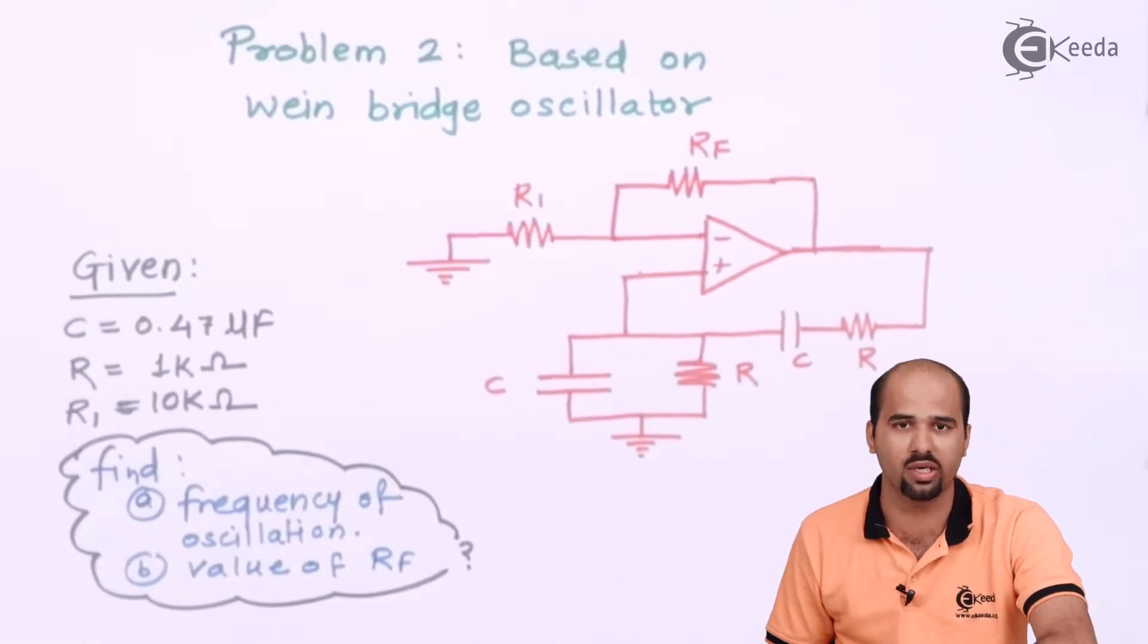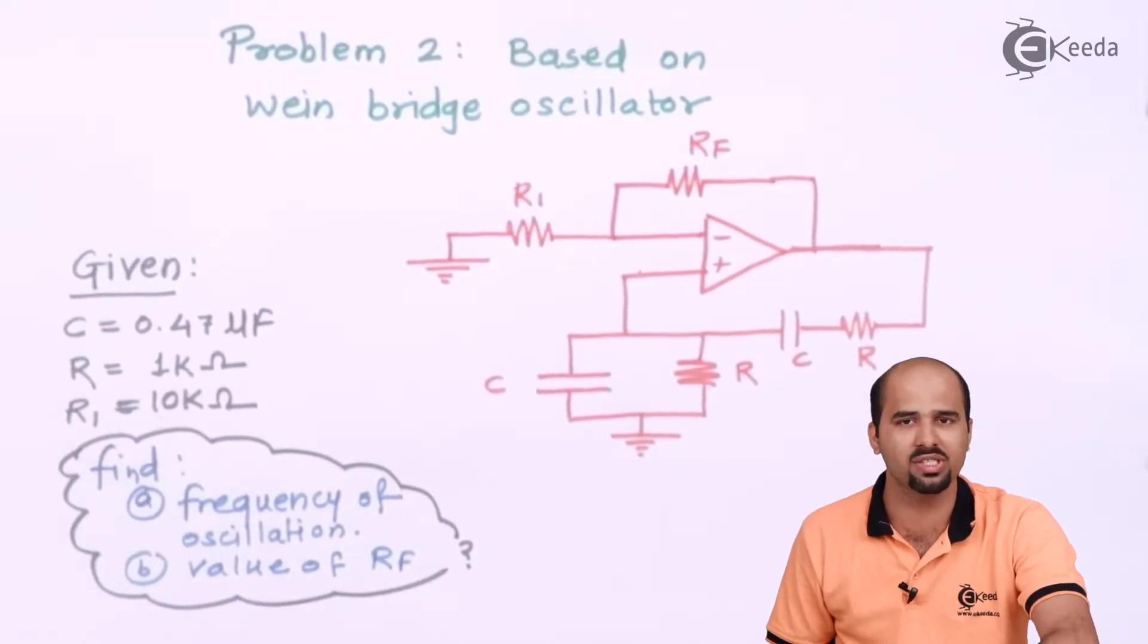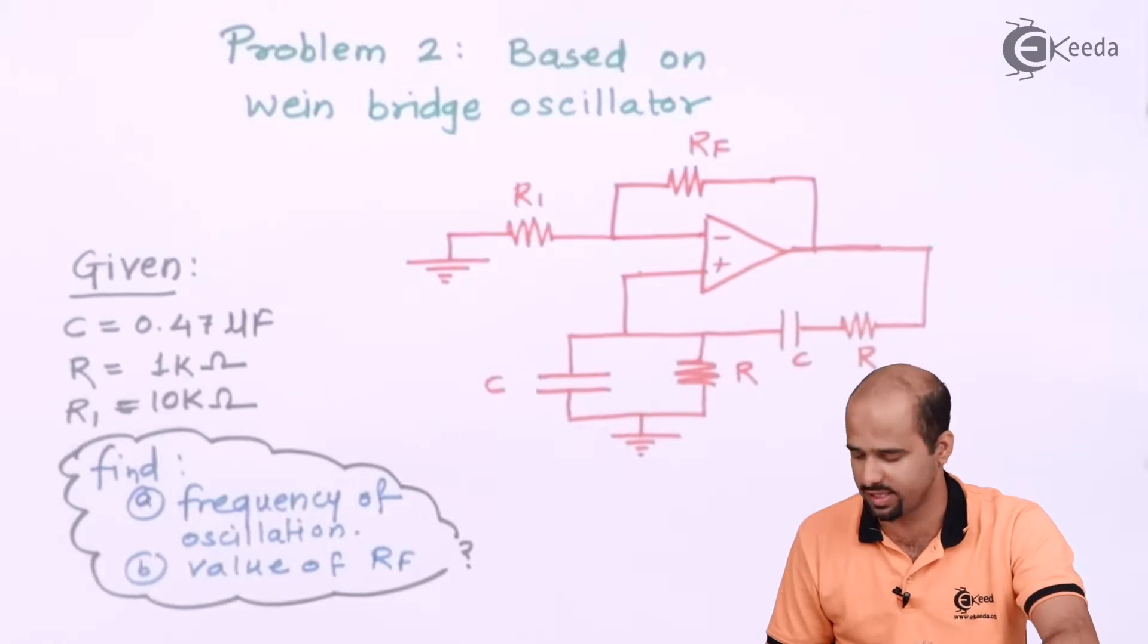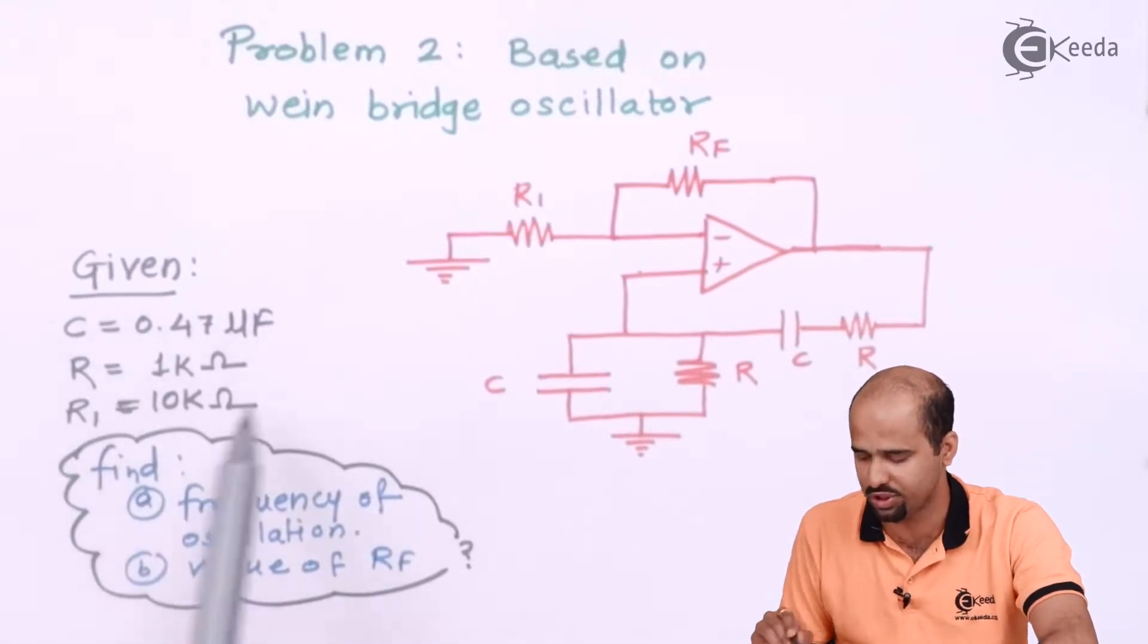As far as Wien bridge oscillator formula is concerned, you just have to put the value and get the answer. Let's move towards the values which are given.